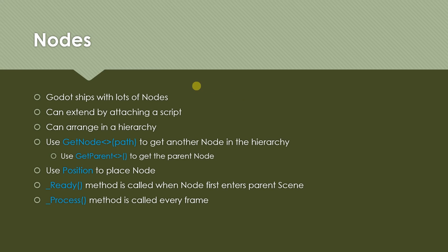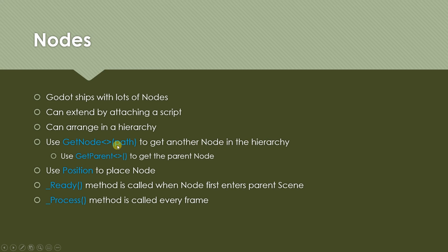A little bit more about nodes: Godot ships with a lot of nodes, each with a little bit of different functionality that you can reuse. You can extend or control a node by attaching a script to it, which is what we're going to do in this tutorial. You arrange nodes and scenes in a hierarchy. You use the get_node function — it's a template function — to get another node in the hierarchy.